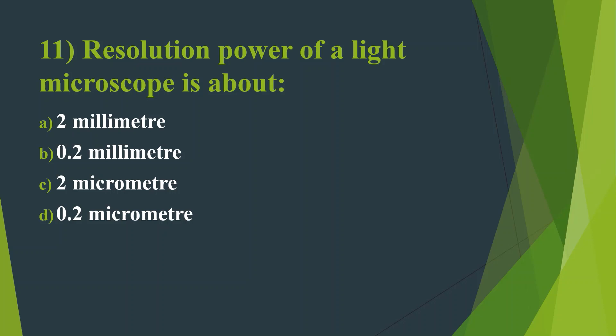Eleventh question: The resolution power of a light microscope is about — Option A: 2 mm. Option B: 0.2 mm. Option C: 2 micrometer. Option D: 0.2 micrometer. Here the answer is Option D, 0.2 micrometer. The resolution power of an electron microscope is 10 angstroms.